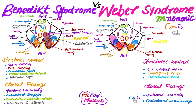In Weber syndrome, the structures involved are the corticobulbar tracts, corticospinal tracts, and the third cranial nerve. To summarize: Benedict syndrome involves the third cranial nerve nucleus, red nucleus, corticospinal tracts, superior cerebellar peduncle, and substantia nigra. Weber syndrome involves the third cranial nerve, corticospinal tract, and corticobulbar tract.